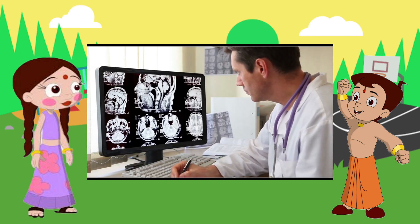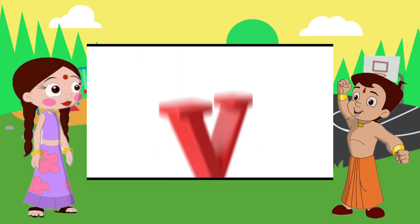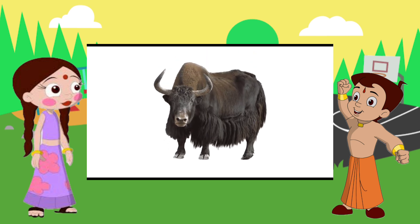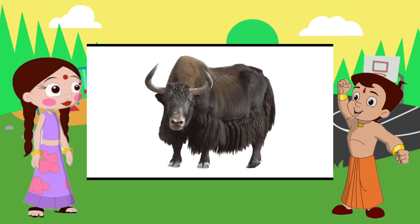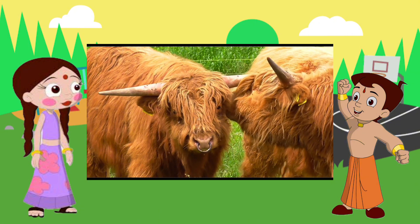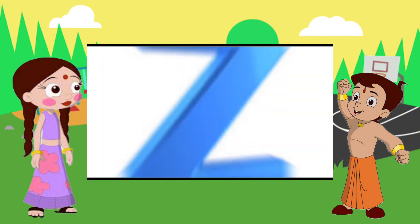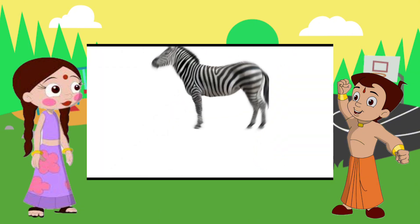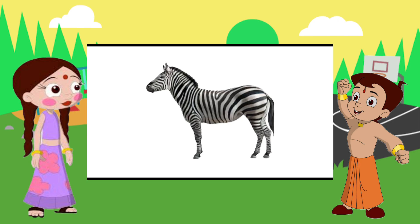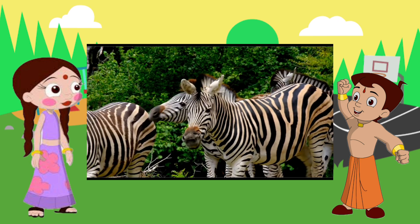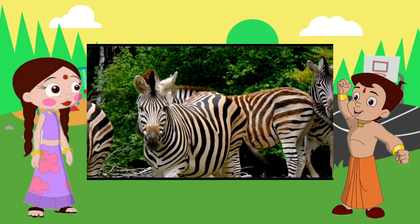Y is for york. Y-y-york, y-york, Y is for york. Z is for zebra. Z-z-zebra, z-z-zebra. Z is for zebra.